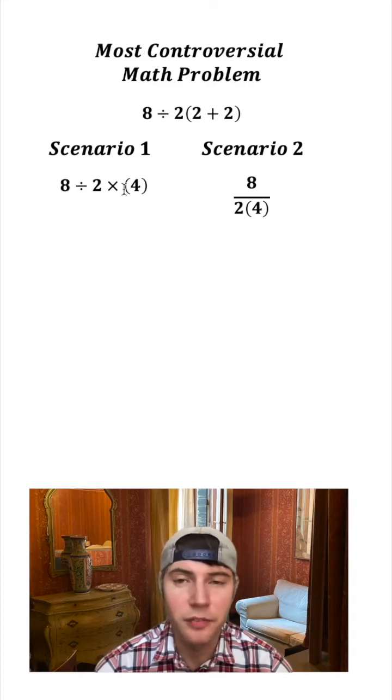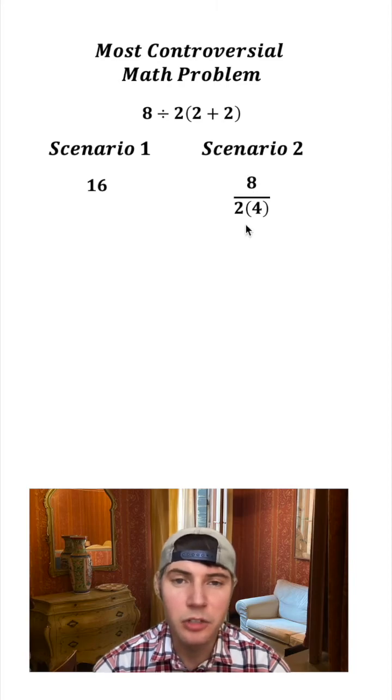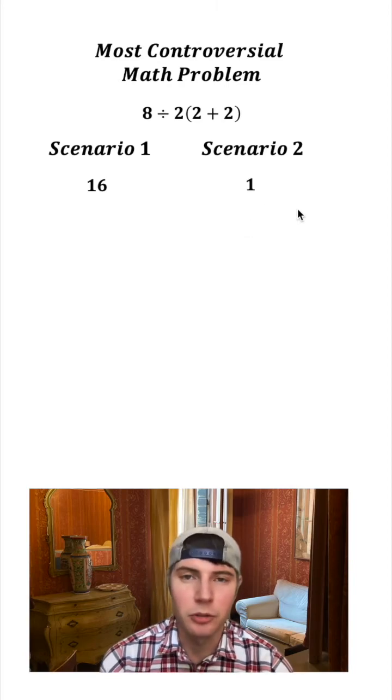In this scenario, we would just go from left to right. 8 divided by 2 is 4, 4 times 4 is 16. In this scenario, we would do the 2 times 4 on the bottom. 8 over 8 is equal to 1.